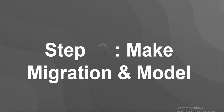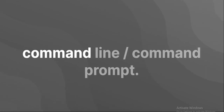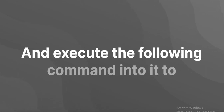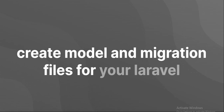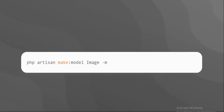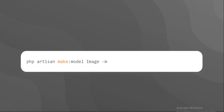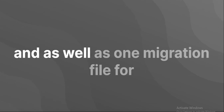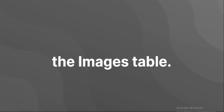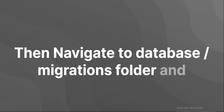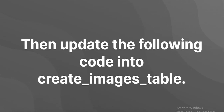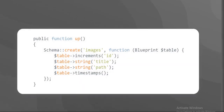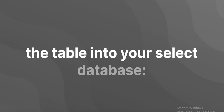Create migration and model. Open your terminal command line and execute the following command to create model and migration files for your Laravel application. Then add one model named File as well as one migration file for the images table. Open the database/migrations folder and open create_images_table.php. Then update the following code into create_images_table.php. After that, run the following command to migrate the table into your selected database.